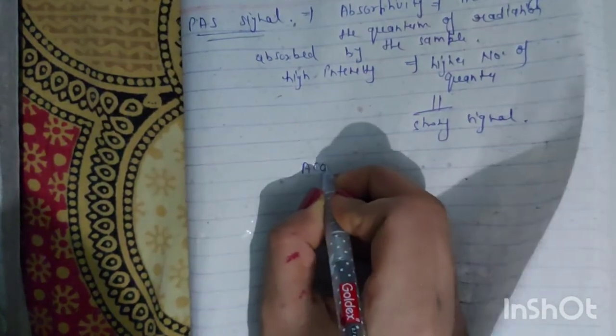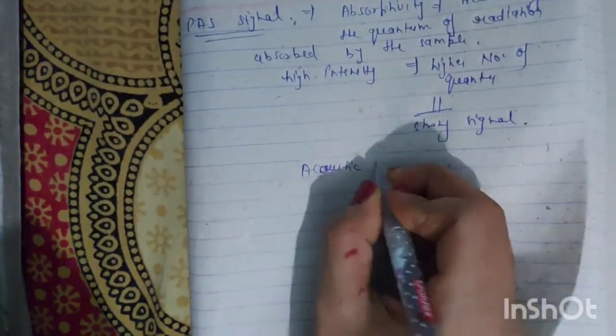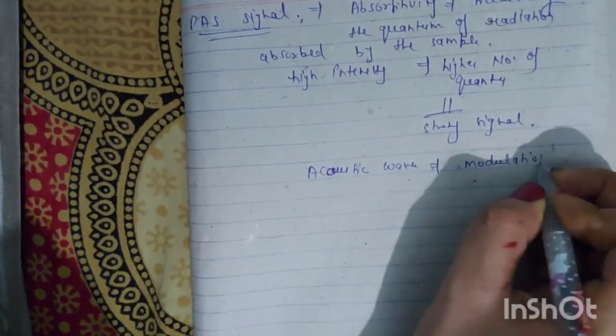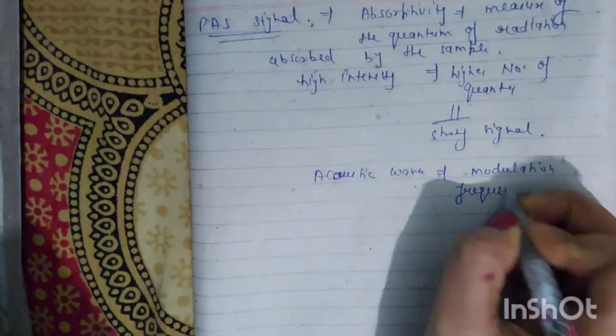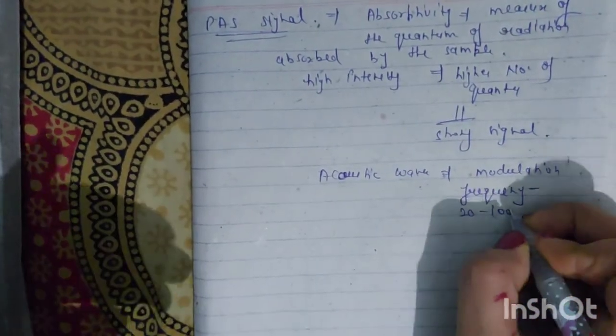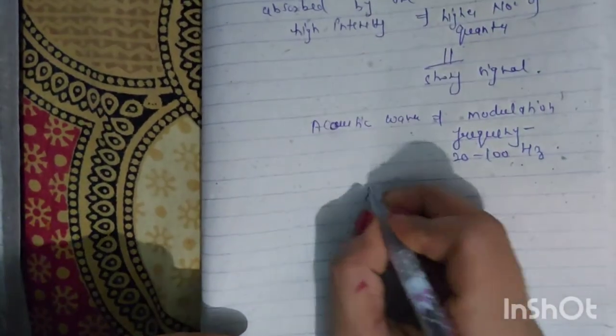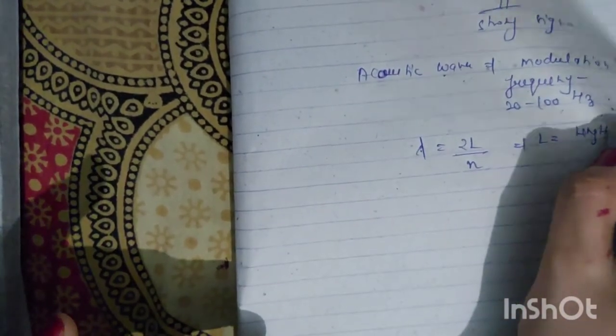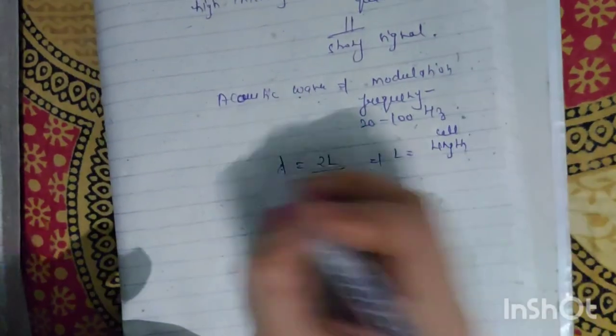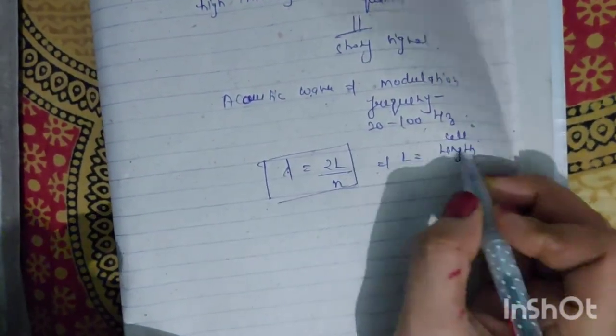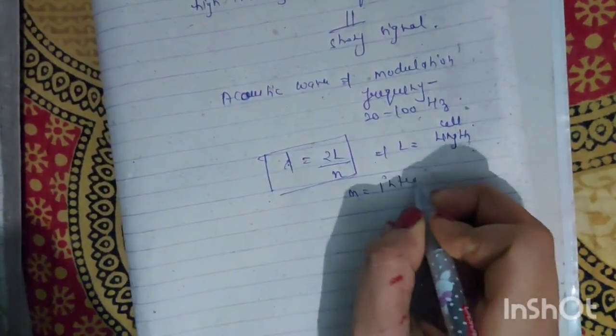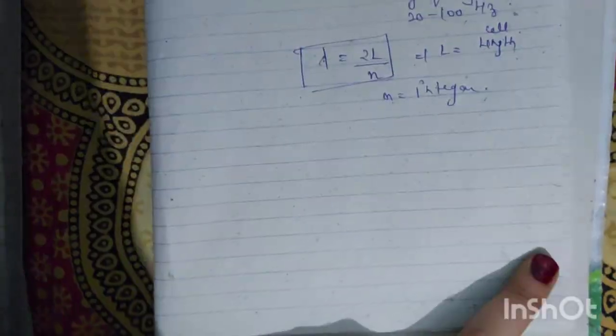We have acoustic waves with modulation frequency around 2200 Hz. We have a wavelength formula: lambda equals 12 upon N, where L is the cell length and N is an integer.